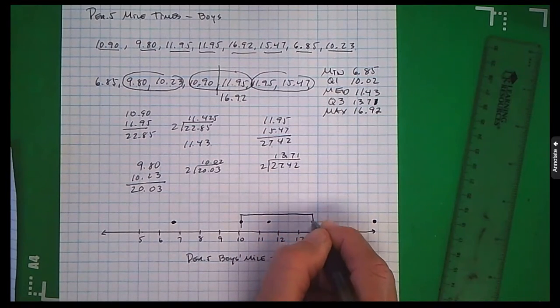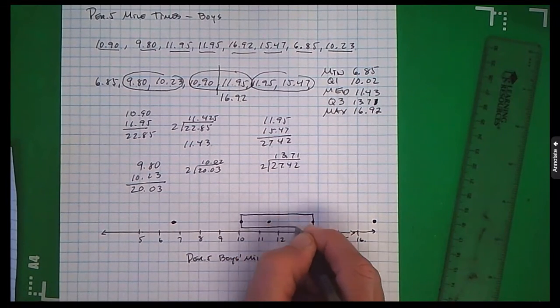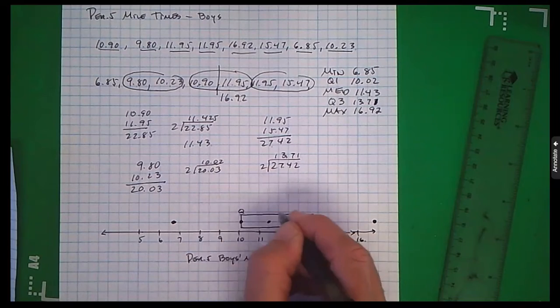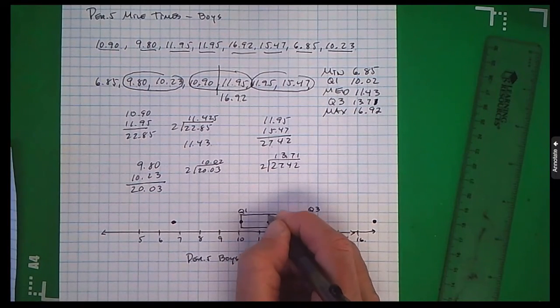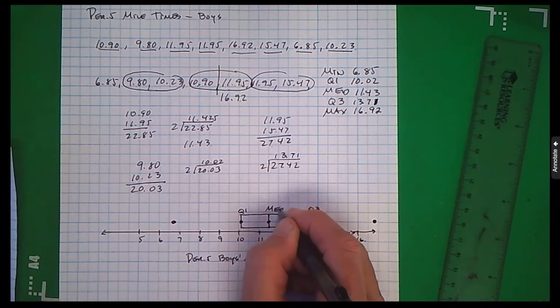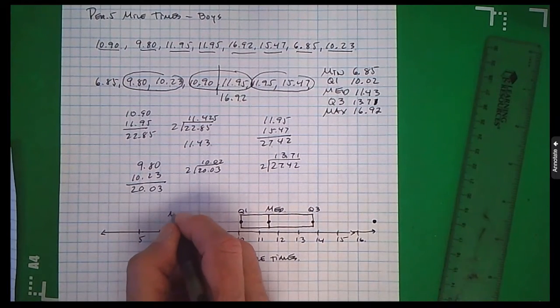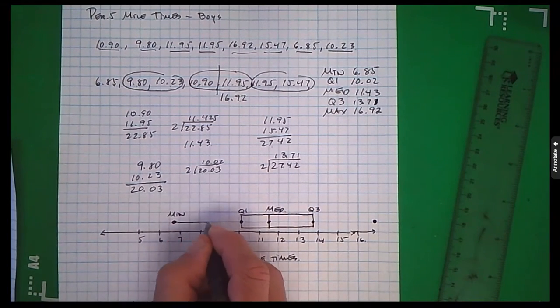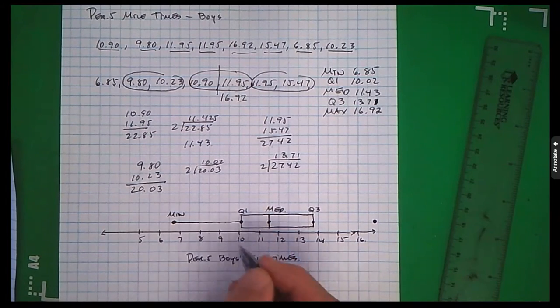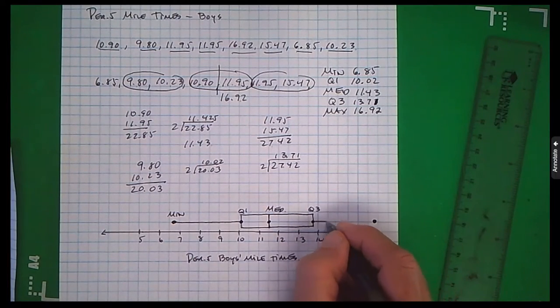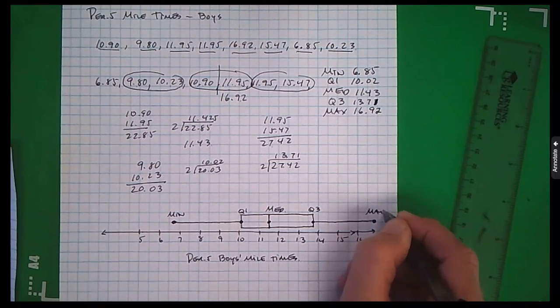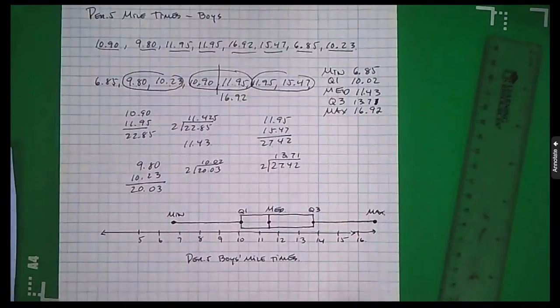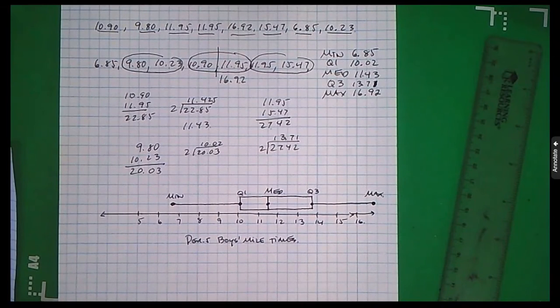Here's the maximum. The box goes all the way from q1 to q3 with a line in the middle there for the median. Connecting the minimum to the box. I'm connecting the box to the maximum. And there's my boy's mile time.